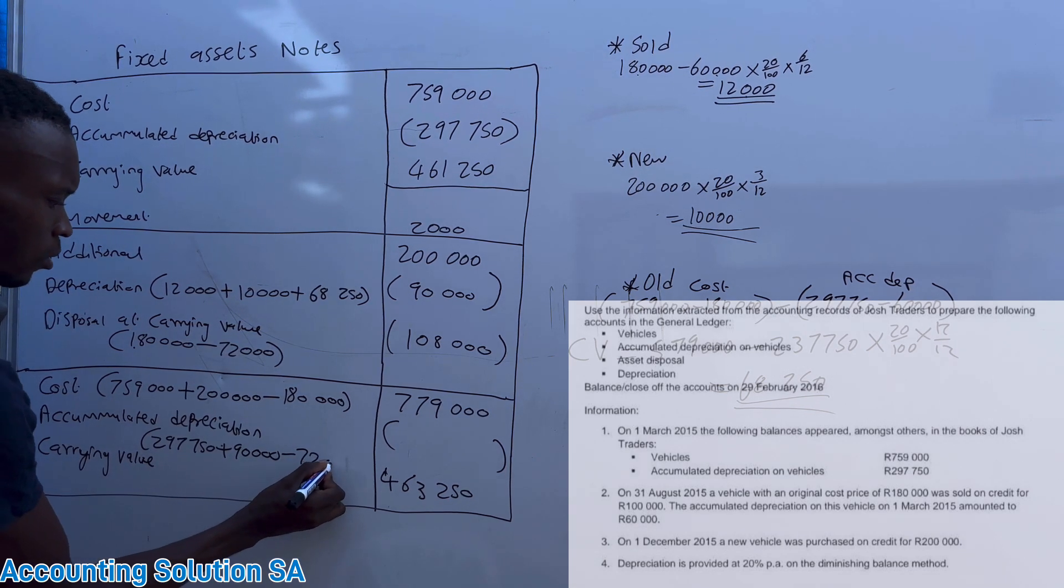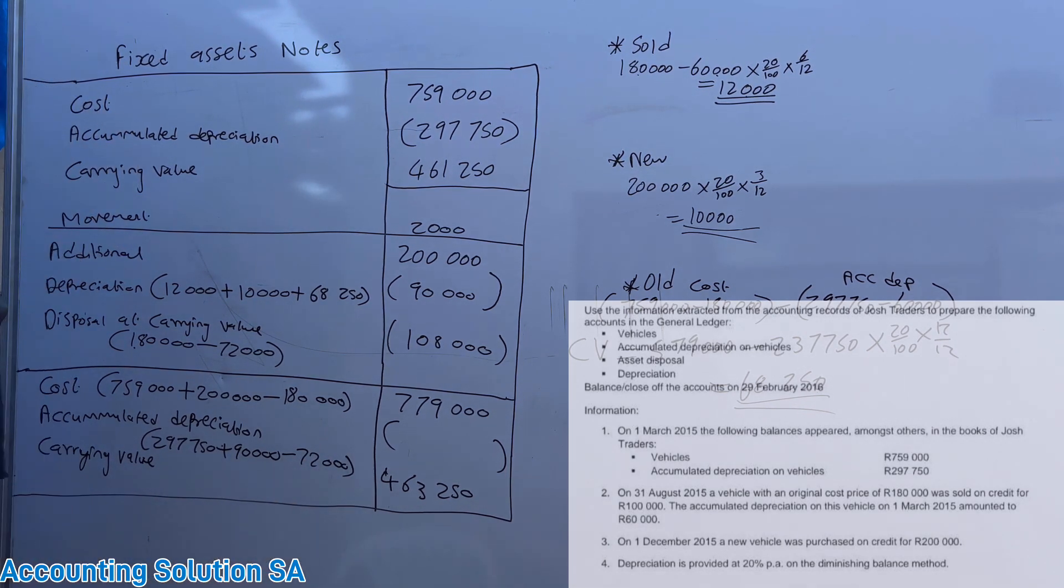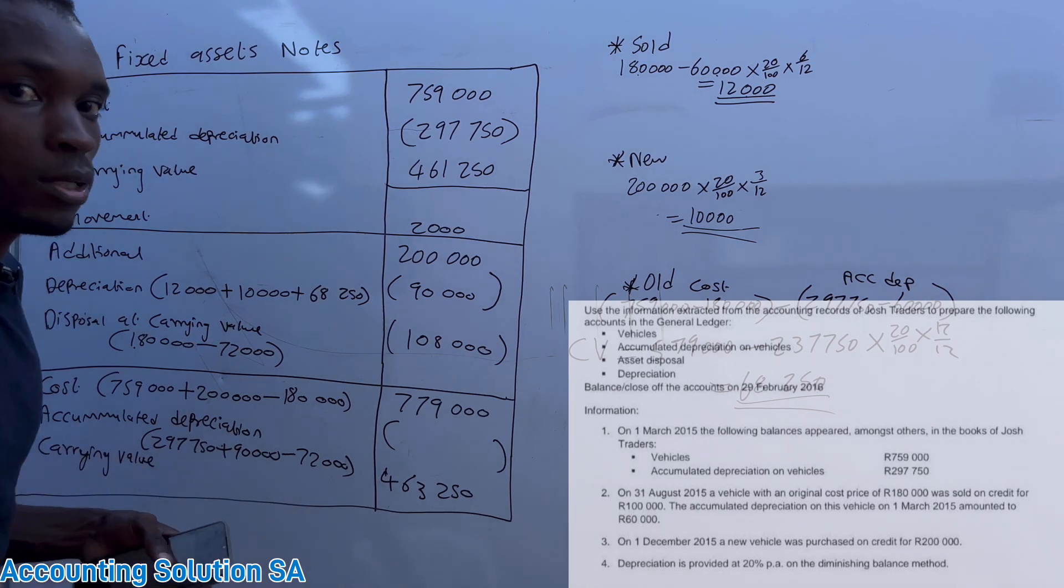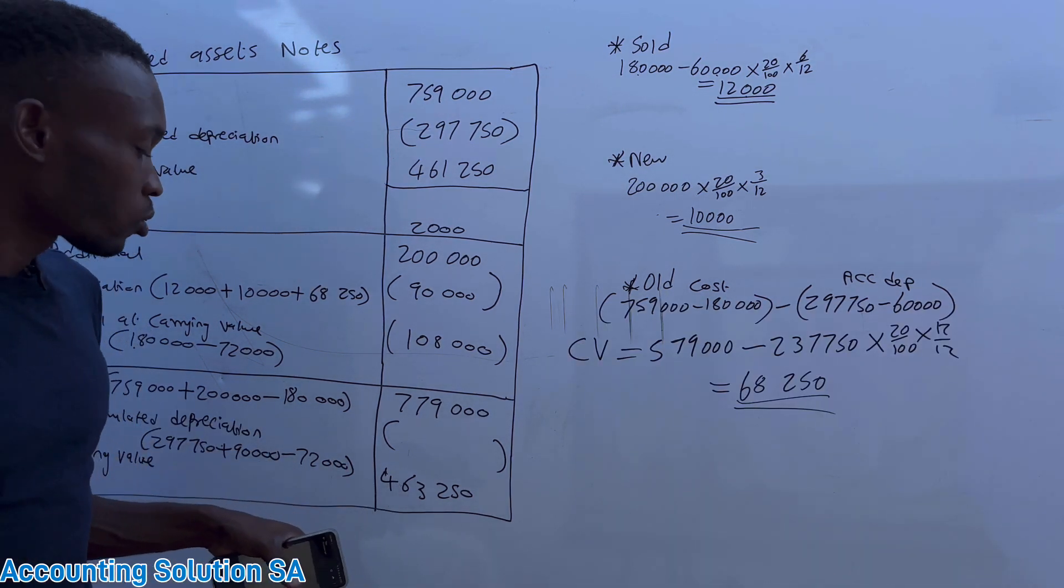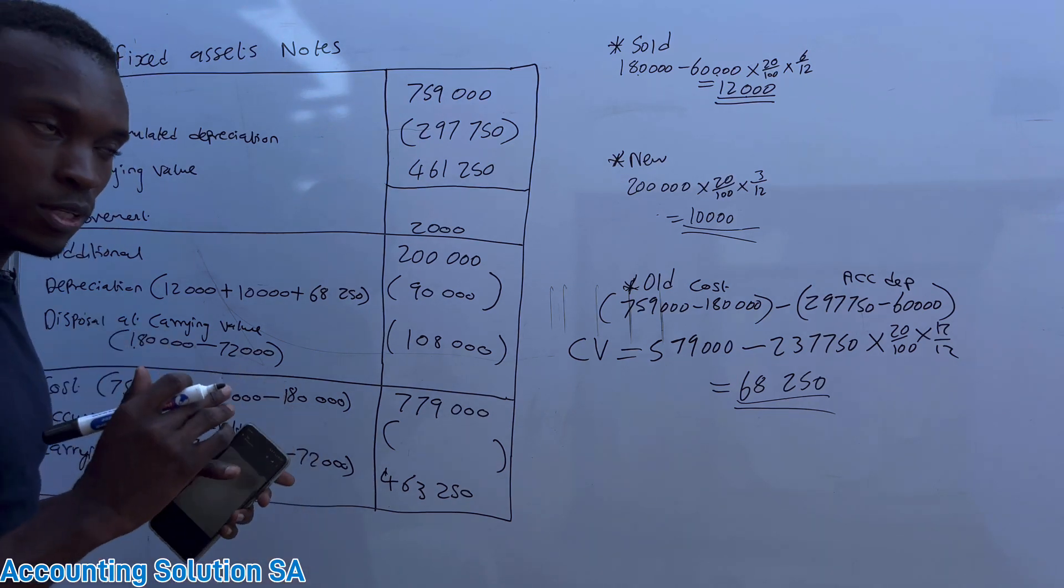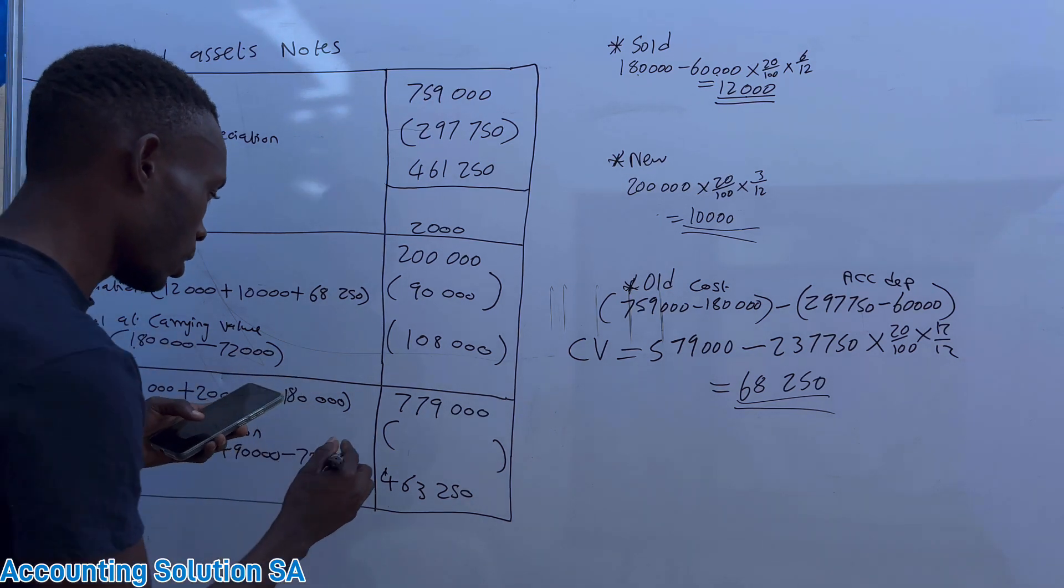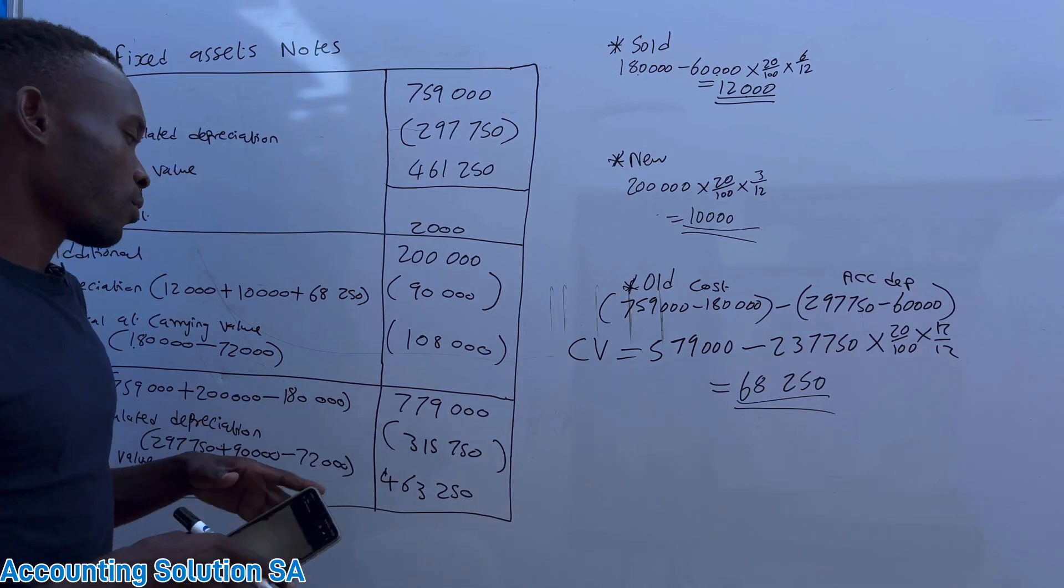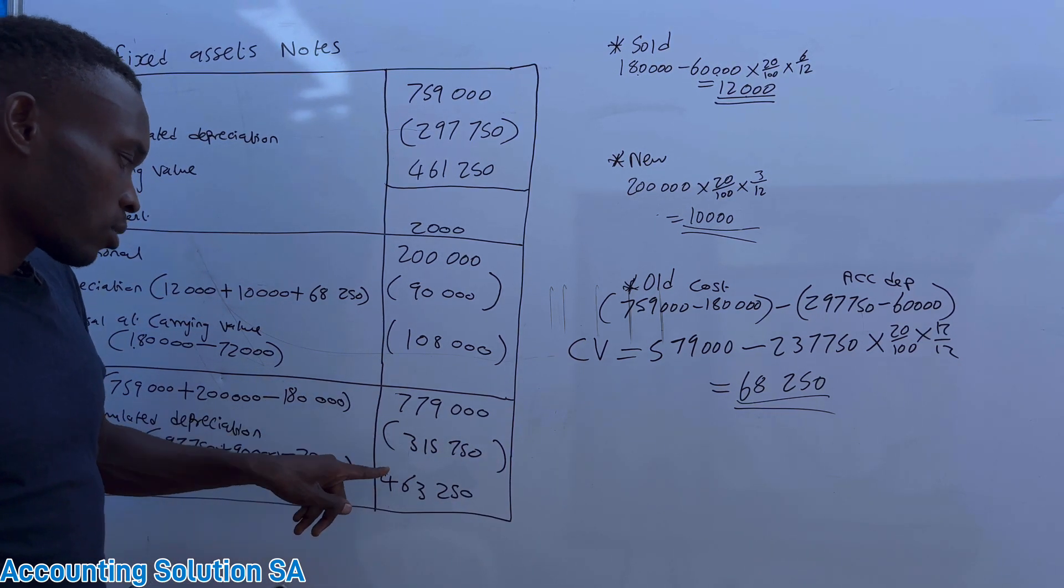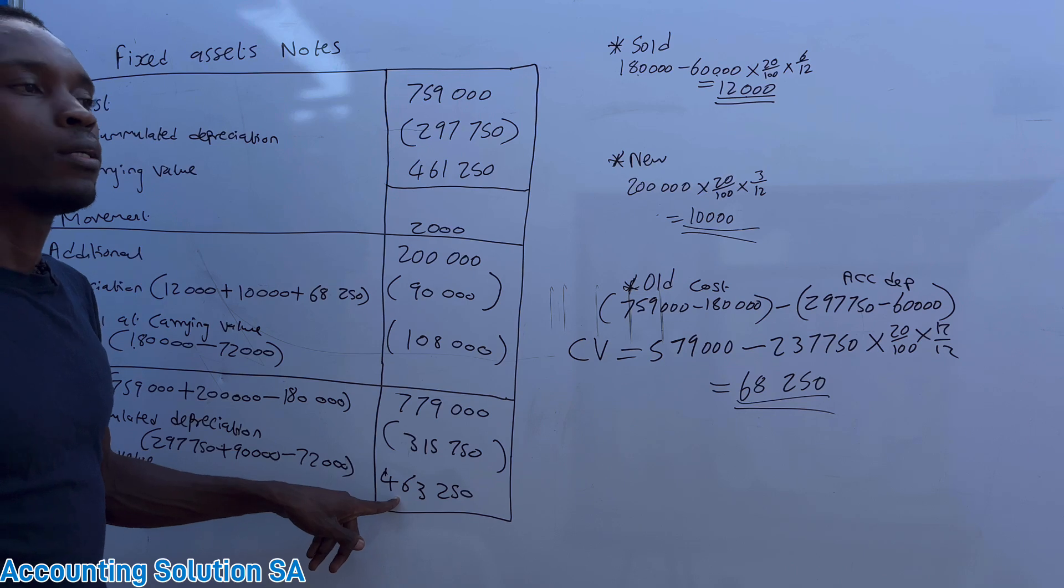And after that you subtract the one for disposal minus 72,000. Why are we subtracting this 72,000? Because we no longer have this vehicle, so no need to stay with accumulated depreciation of it, we need to subtract it, then it's gonna give you 315,750. So if you take this one minus this one, it's gonna give you this one, just like that.